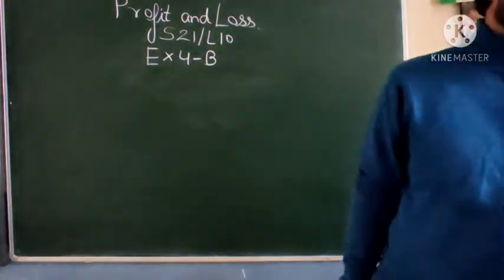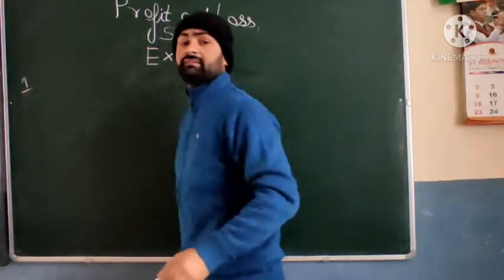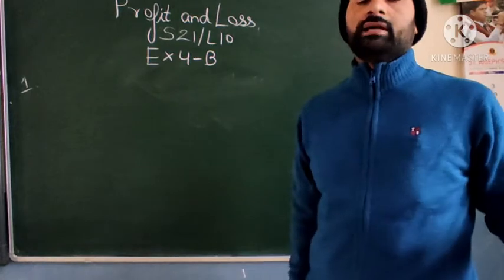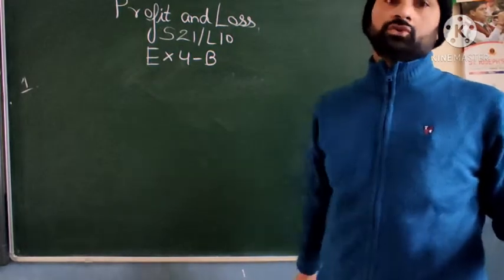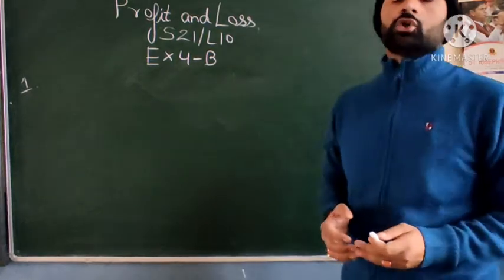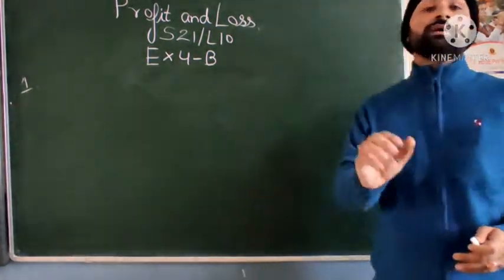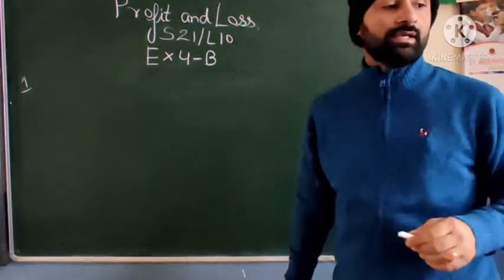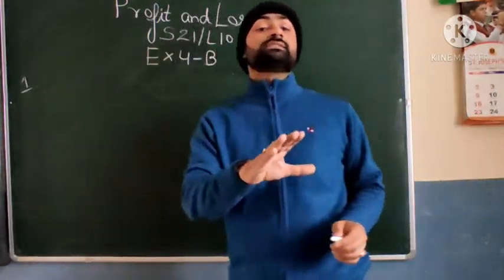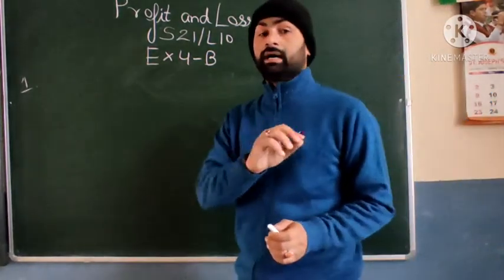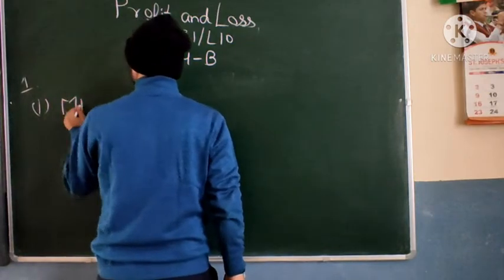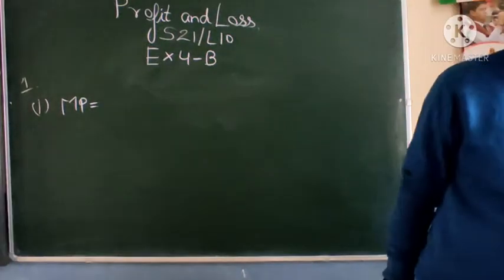So again this is about discount. MP means mark price — this is the price which is marked on the goods, and whatever discount you are getting, that is over the mark price only. Just like profit and loss percent is calculated on the basis of cost price, the discount is decided on the mark price. So let's see a simple question: find the discount and discount percentage when MP and SP are given. SP is the final selling price, mark price is the price marked on the goods. First part: MP is given as Rs. 250.